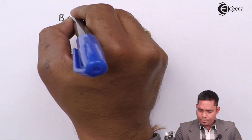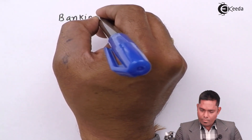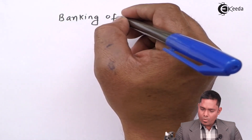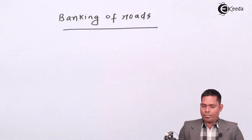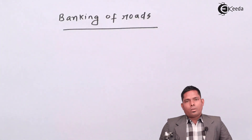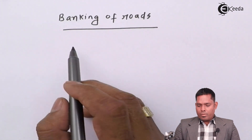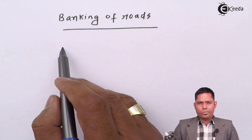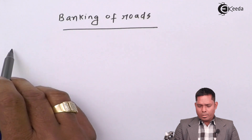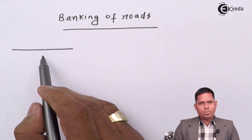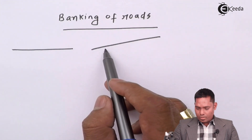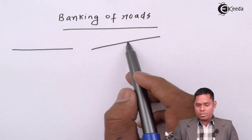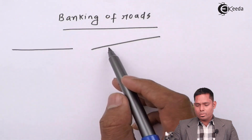What is banking of roads? We have different types of roads. One is a horizontal road. Another is an inclined road — a slopey road. This is called banking of roads, or banked roads.